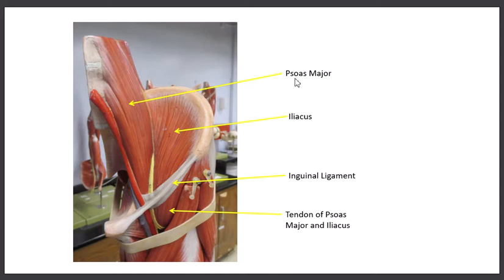Notice psoas is spelled with a P — we don't pronounce it, but you do spell it with a P. Both of these muscles unite together, and as they come out underneath the inguinal ligament right here, they form a common tendon. That tendon is going to go down to the lesser trochanter of the femur. When these two muscles contract, they cause flexion of the hip — they're very powerful hip flexors. Most of the muscles in this lab you can also see on the small leg model, but these two muscles — especially the psoas — are best seen on the large leg model I'm demonstrating today.